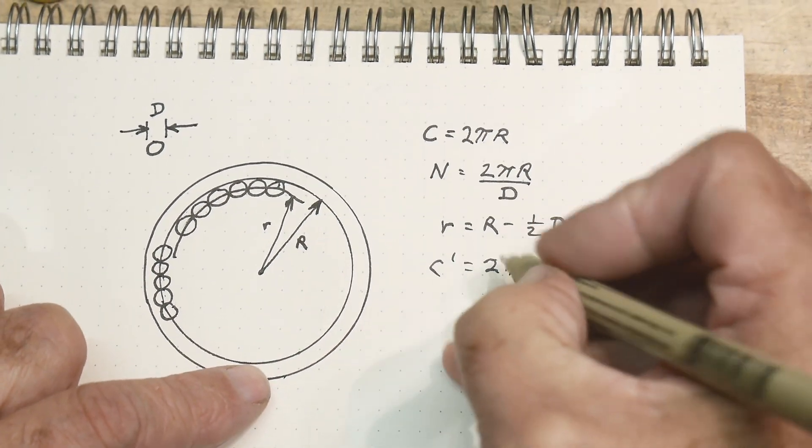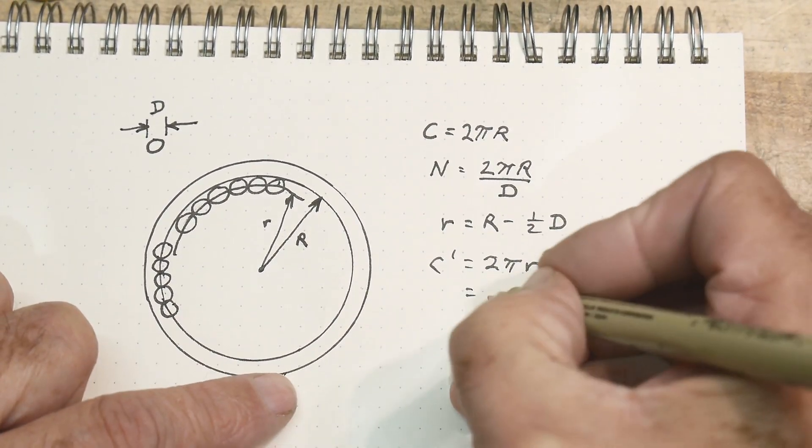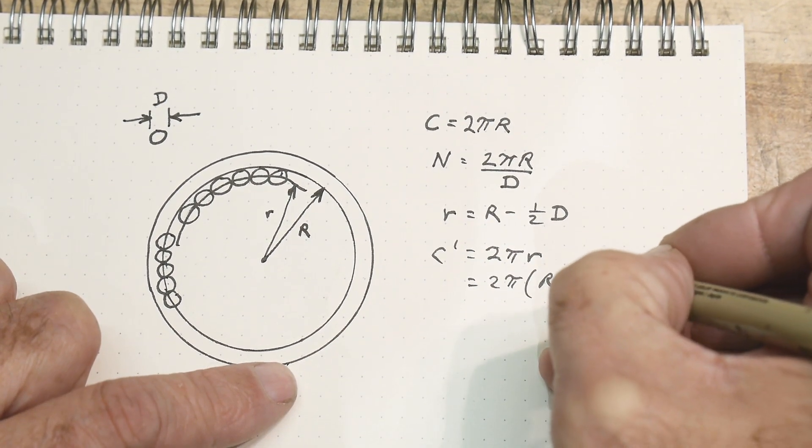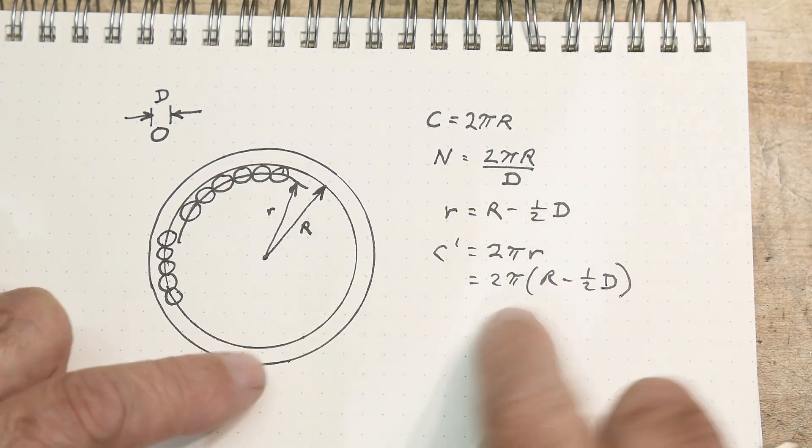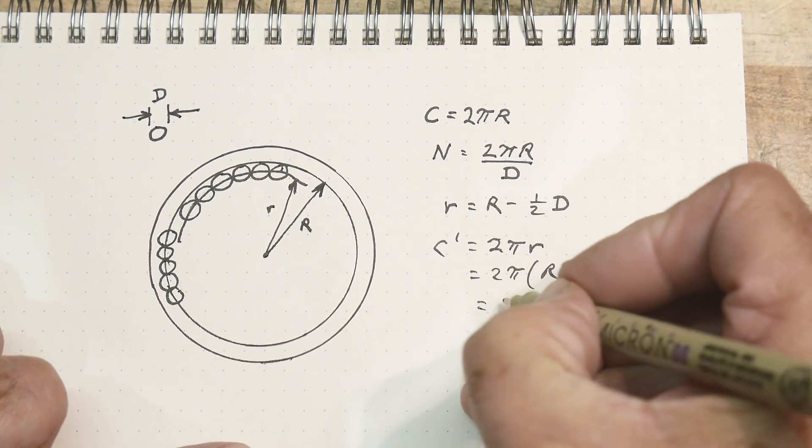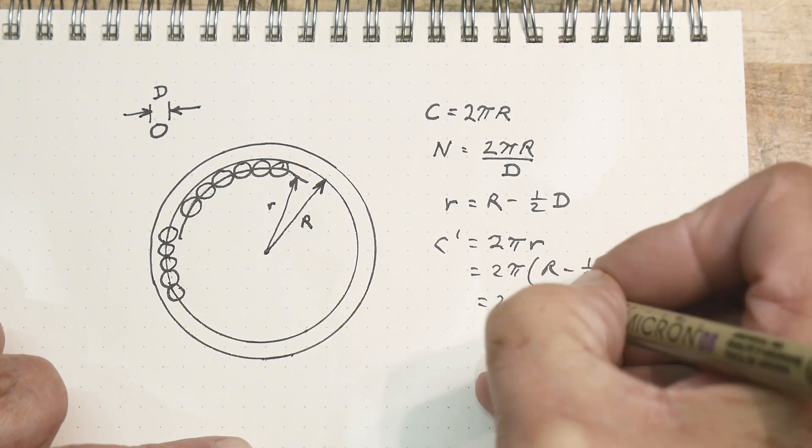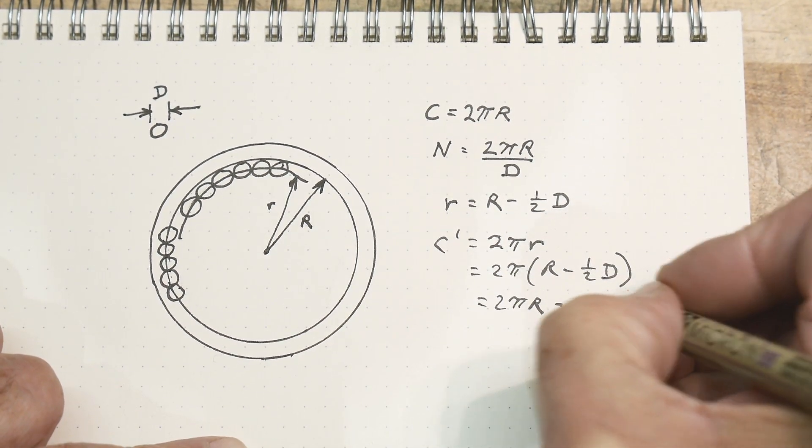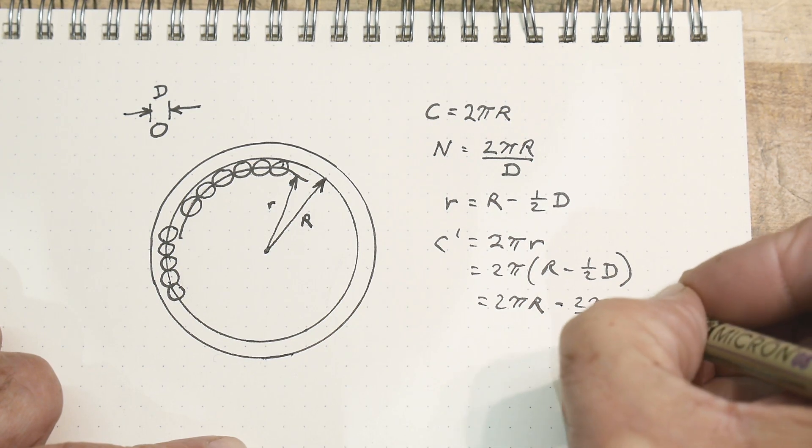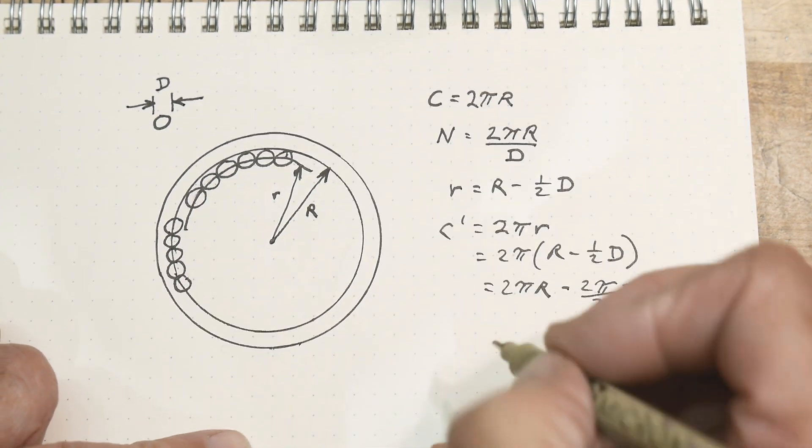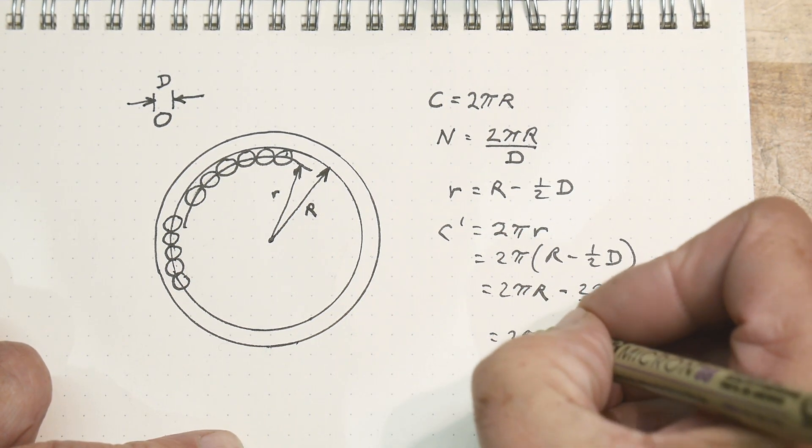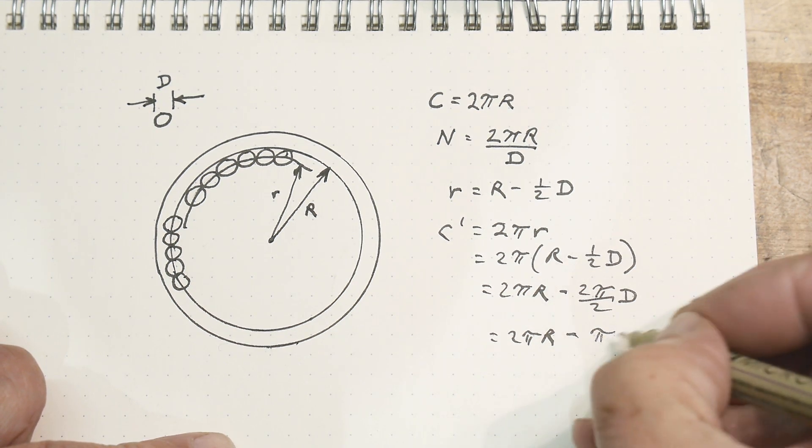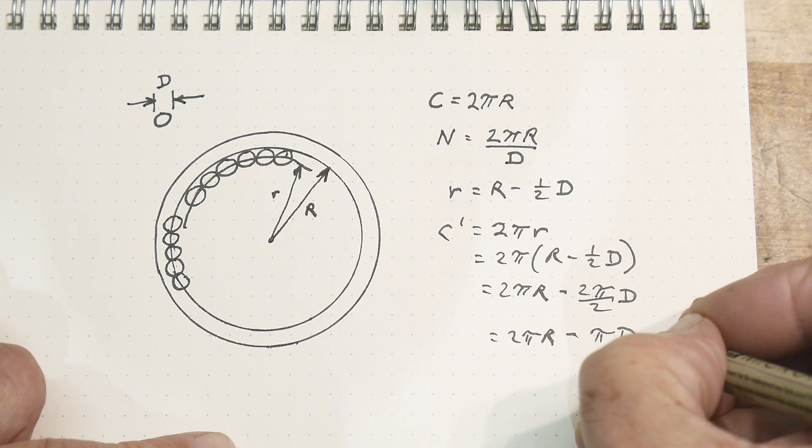C prime equals 2π little r. Okay. Which is also equal to 2π(r - 1/2d). Because we just calculated that. Which is equal to 2πr - 2π/2d, which is equal to 2πr - πd.